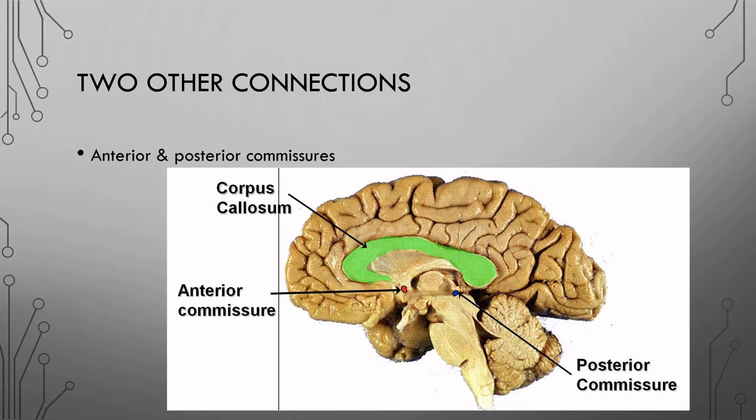Just as a side note, there are two other routes that allow interhemispheric communication other than the corpus callosum. We're not going to dive too deep into those, but just know that they're called the anterior and posterior commissure.